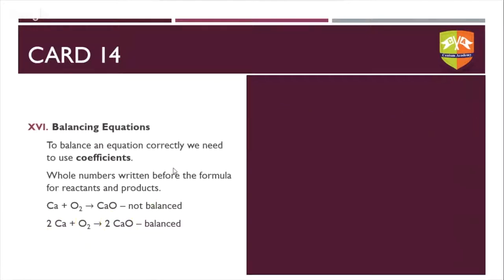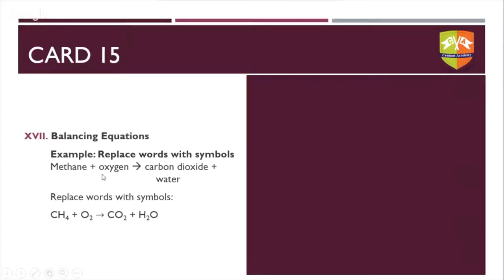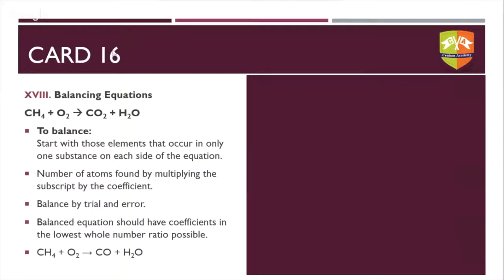Another method is to make a table — an iterative table where you put all atoms into reactants and products columns. For carbon: one reactant, one product; for hydrogen: four reactant, two product; for oxygen: two reactant, three product. First clear the obvious balance, then multiply as needed. This is a quick method — draw a chart where you balance each element systematically.